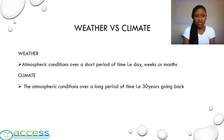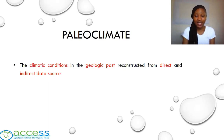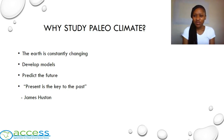Before we unfold what paleoclimate is, we first need to understand the difference between weather and climate. A friend of mine once told me that weather is what you are going to wear today and climate is what you are going to pack for a vacation. Weather is the atmospheric conditions over a short period of time — a day, weeks, or maybe months. Climate is the atmospheric conditions over a long period of time, that is from 30 years going back. Paleoclimate is the climatic conditions in the geologic past, reconstructed from direct and indirect data sources. We study paleoclimate because the earth is constantly changing, to develop models, and to predict the future.